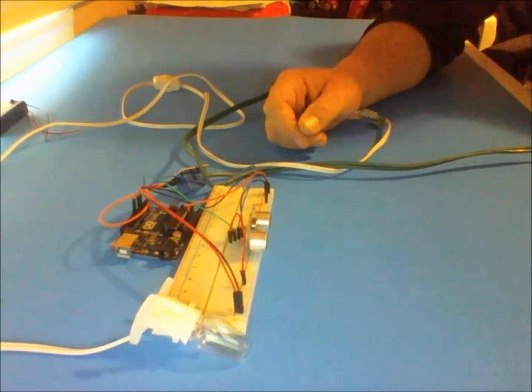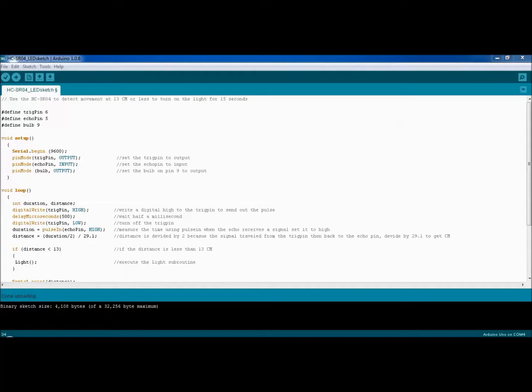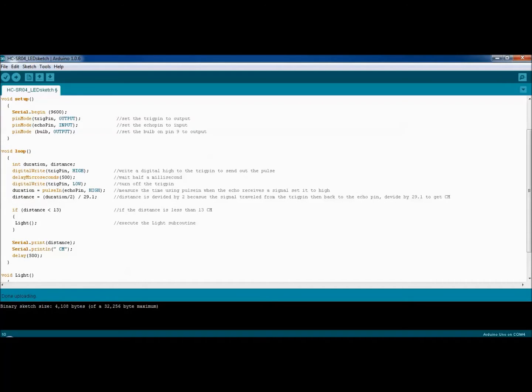Here's the Arduino sketch that I wrote beforehand. We're using the SR04 to detect movement at less than 13 centimeters, and when it does, it turns on the light for about 15 seconds. We start the sketch by defining three variables: trigger pin at 6, echo pin at Arduino pin 5, and the bulb at Arduino pin number 9. In the void setup, we start the serial monitor at 9600 bauds and define the trigger pin to output, the echo pin to input, and the bulb also to output.